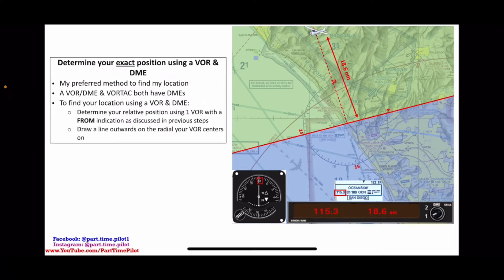To find your location using a VOR and DME, you're going to determine your relative position using one VOR with a FROM indication, as discussed in our previous video. You can click and watch that video in the top right. It tells you how to use the TO/FROM, how to use the VOR needle, whether it's centered or not, to determine your relative position.